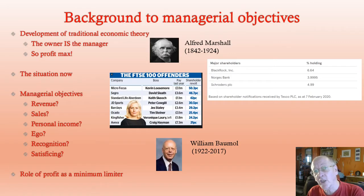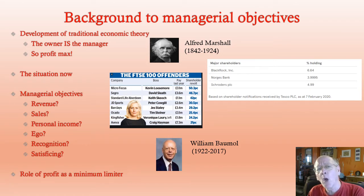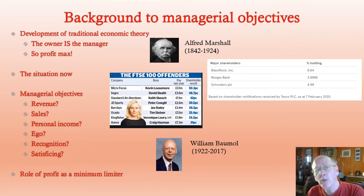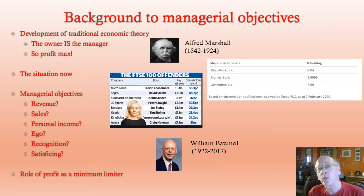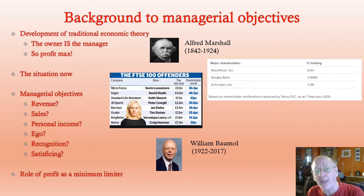Why are economists interested in the principal-agent problem? When the theory of the firm was first developed over 100 years ago by people like Alfred Marshall, there wasn't a problem. Primarily most businesses were run by the owner. Imagine your Victorian factory — the owner is going to be wandering around making sure that the workers were working hard and that all was running efficiently, because it was their money that was at risk. So the owner is the manager, and therefore they'd be likely to go for profit maximisation.